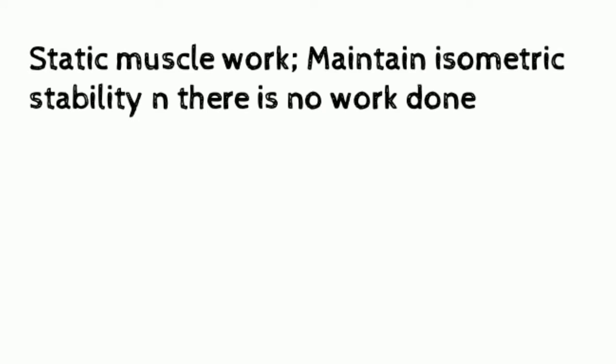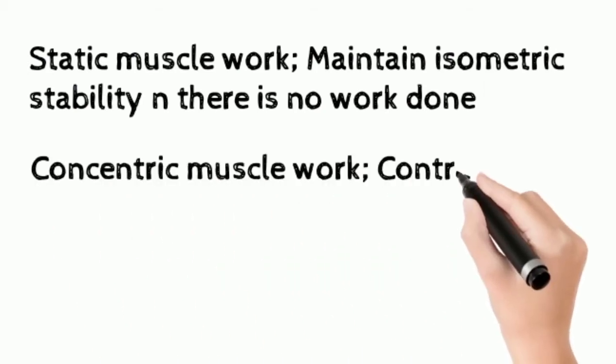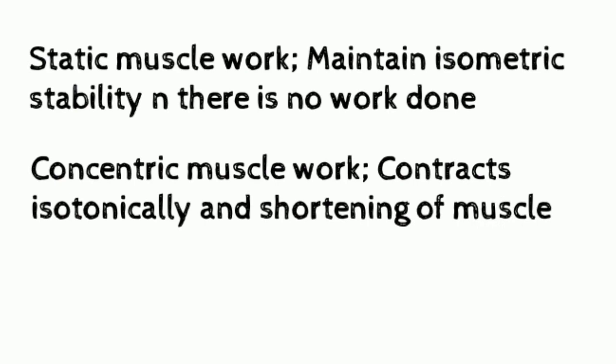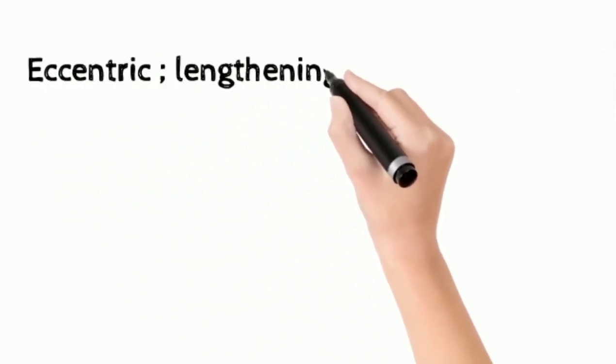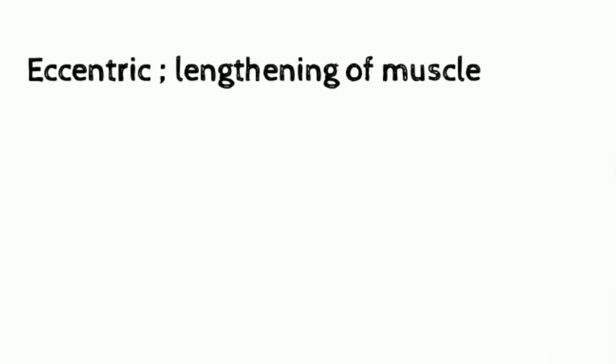Concentric muscle work: the muscle contracts isotonically in shortening to produce movement, and the movement is in the direction of muscle pull. Eccentric muscle work: the muscle contracts isotonically in lengthening, and the movement is opposite to the muscle pull.